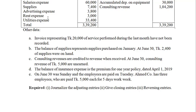The first information is that invoices representing tax of $20,000 of service performed during the last month have not been recorded. The service performed during the last month have not been recorded yet, even if you haven't transformed the service.